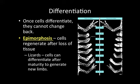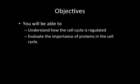Once cells differentiate they cannot change back — a cell that's differentiated into a skin cell won't become a nerve cell. Interestingly, certain organisms can differentiate cells after tissue loss, something most mammals cannot do. This is called epimorphosis. For example, lizards can regenerate new limbs — when they lose their tail they can grow a new one, as shown in the picture here. Hopefully you now understand more about cell cycle regulation, how cancer can result from improper regulation, and about differentiation. See you next time!